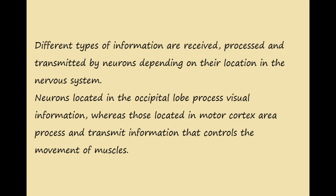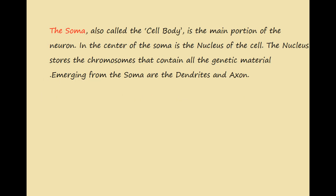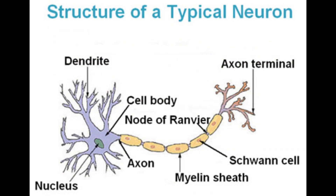The soma, also called the cell body, is the main portion of the neuron. In the center of the soma we have the nucleus of the cell. The nucleus stores the chromosomes that contain all the genetic material. Emerging from the soma, as you can see in the image on screen, are the dendrites and the axon.